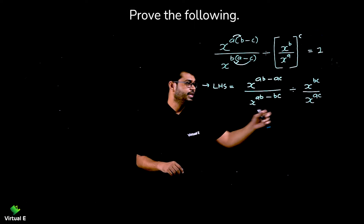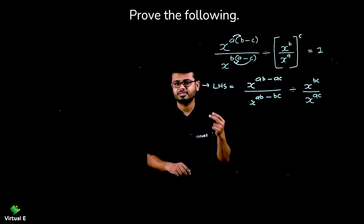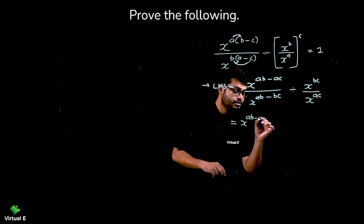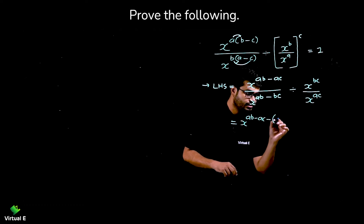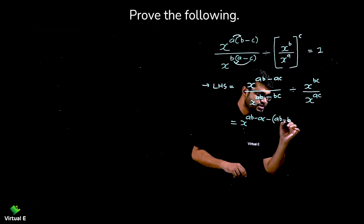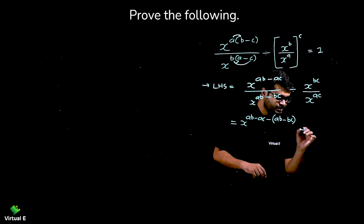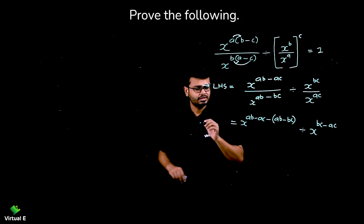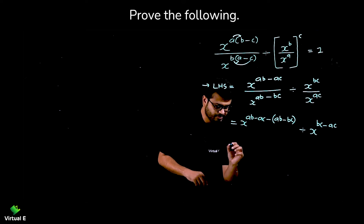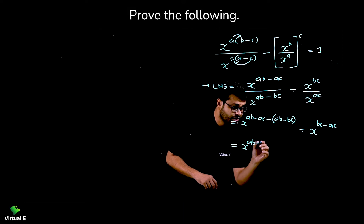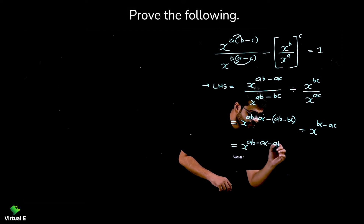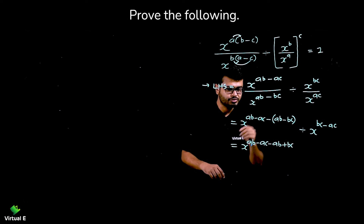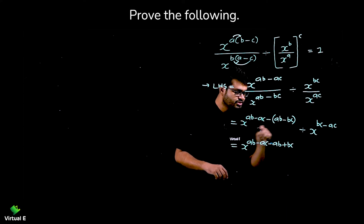Now see this is in division only, and these two are also in division, so we are going to subtract their powers. So here we can write X raise to AB minus AC minus, in bracket, AB minus BC. And in this case X raise to BC minus AC. So let's simplify — we have the negative sign before the bracket, so X raise to AB minus AC minus AB plus BC. Be careful, because there is a minus here, so we are supposed to change the sign: AB becomes minus AB and minus BC becomes plus BC.